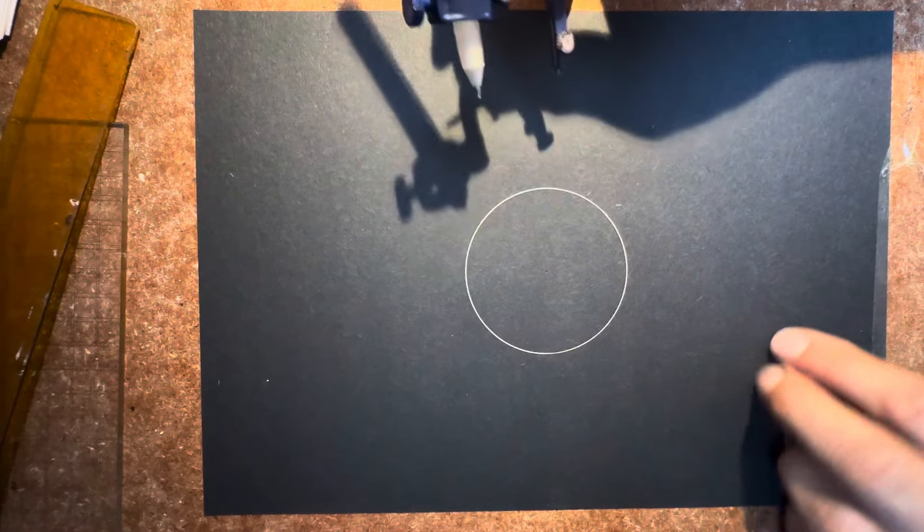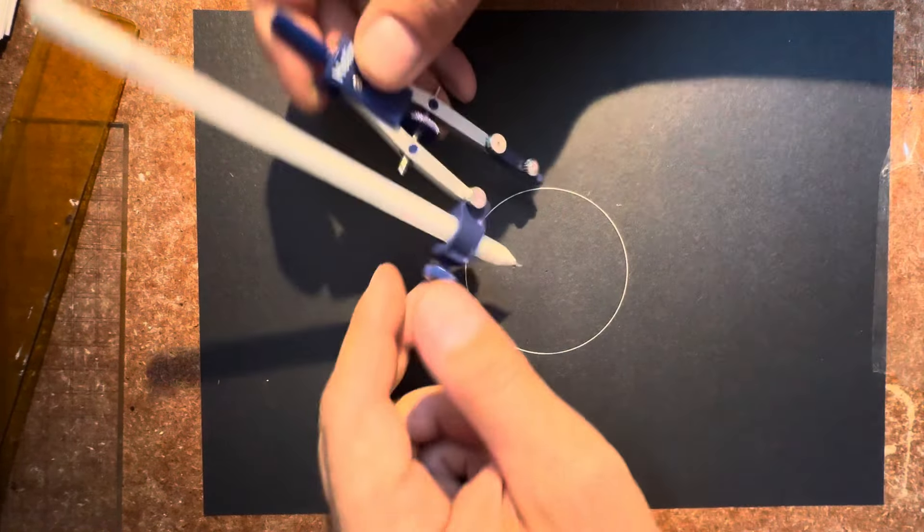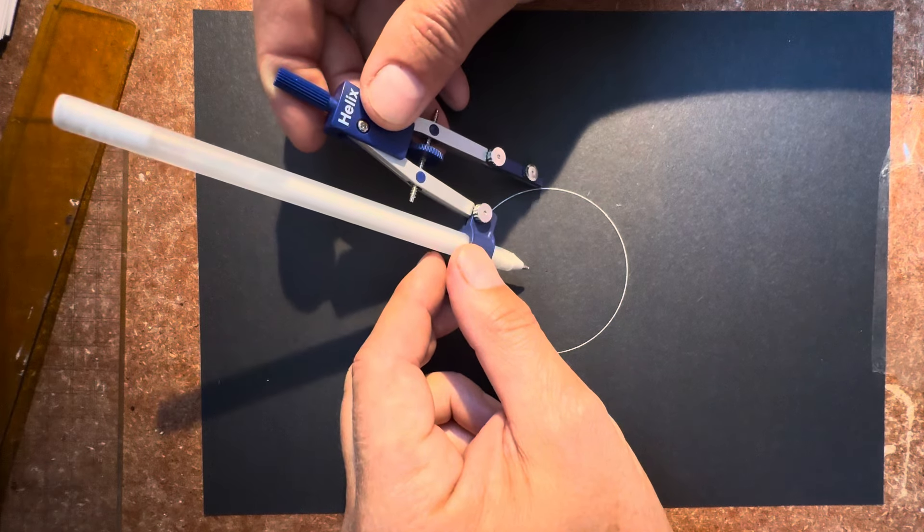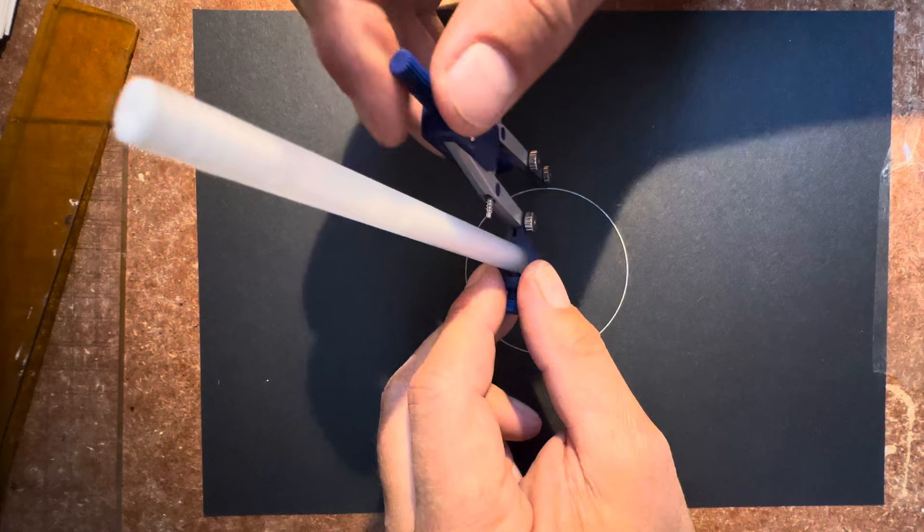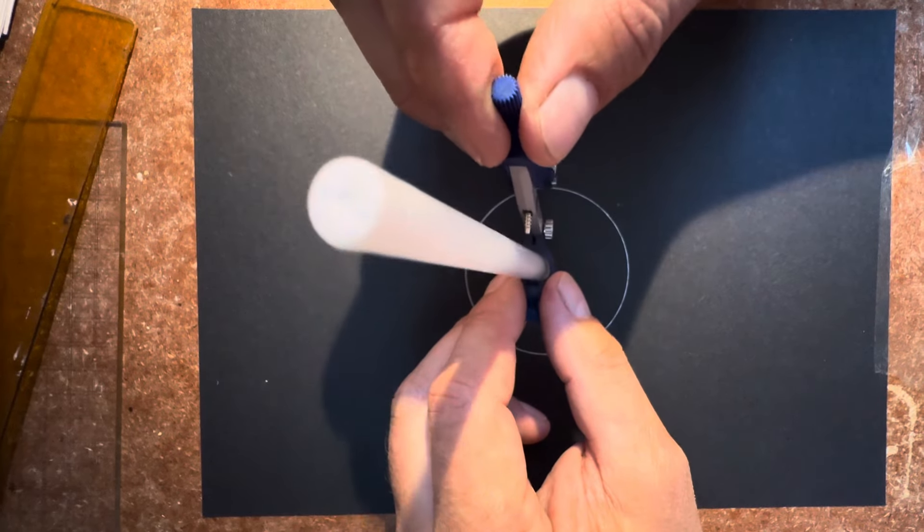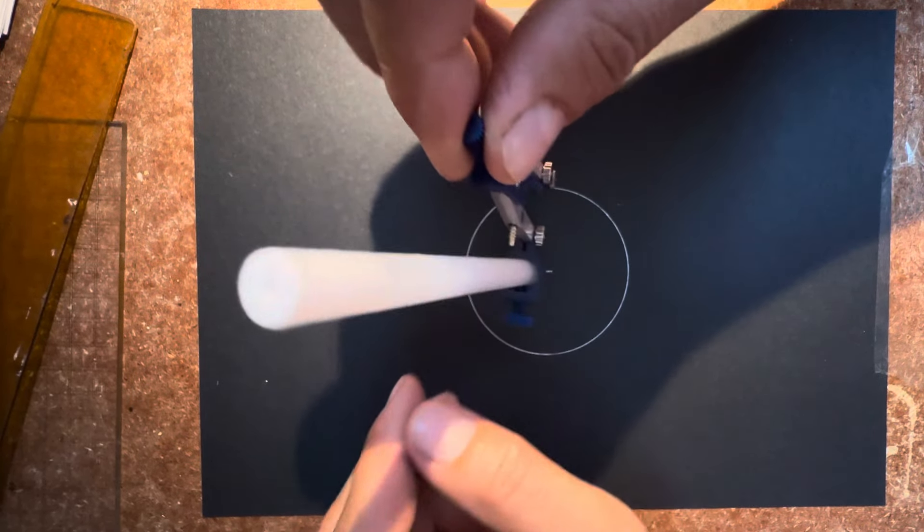Once you have your center circle, you then need to find the point onto the side so that it exactly lines up with the center point. Draw another circle.